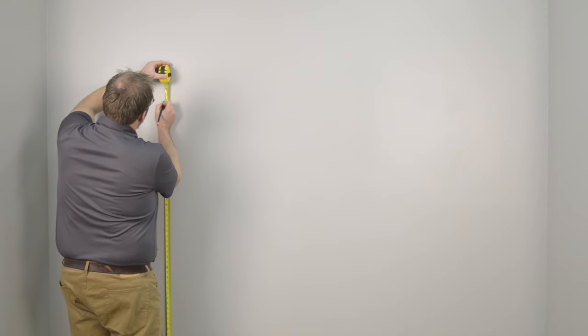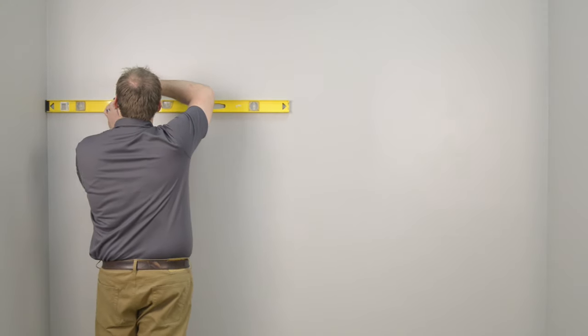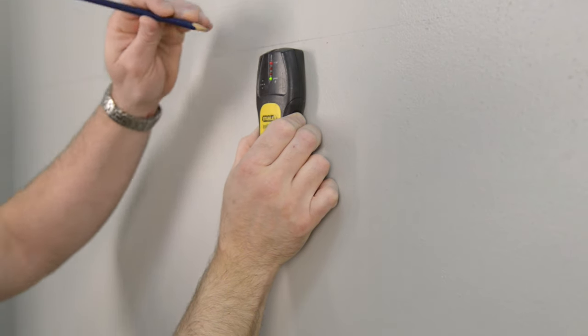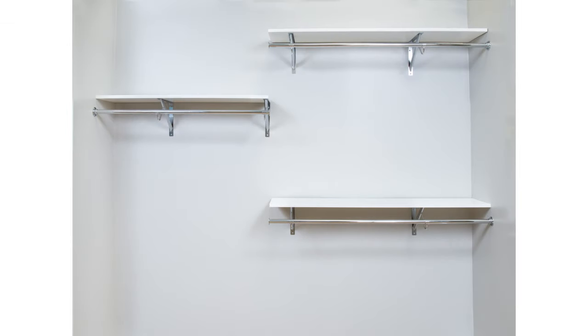Measure the desired height of the shelf. Mark the wall and draw a level line. Locate the stud at the end of the shelf. Determine the layout of the supports.